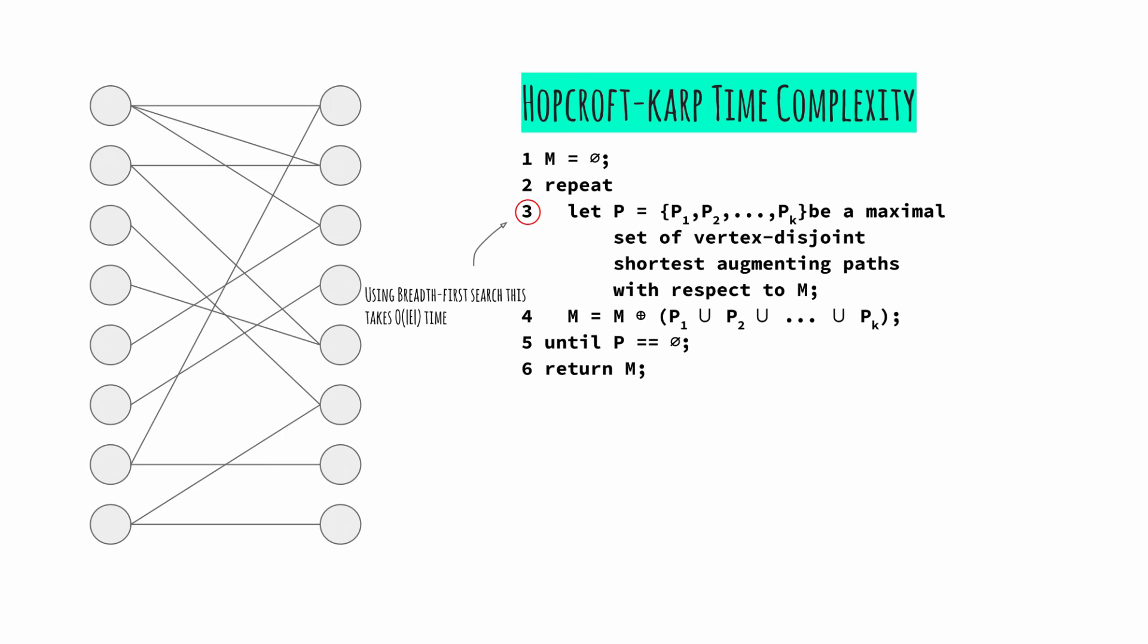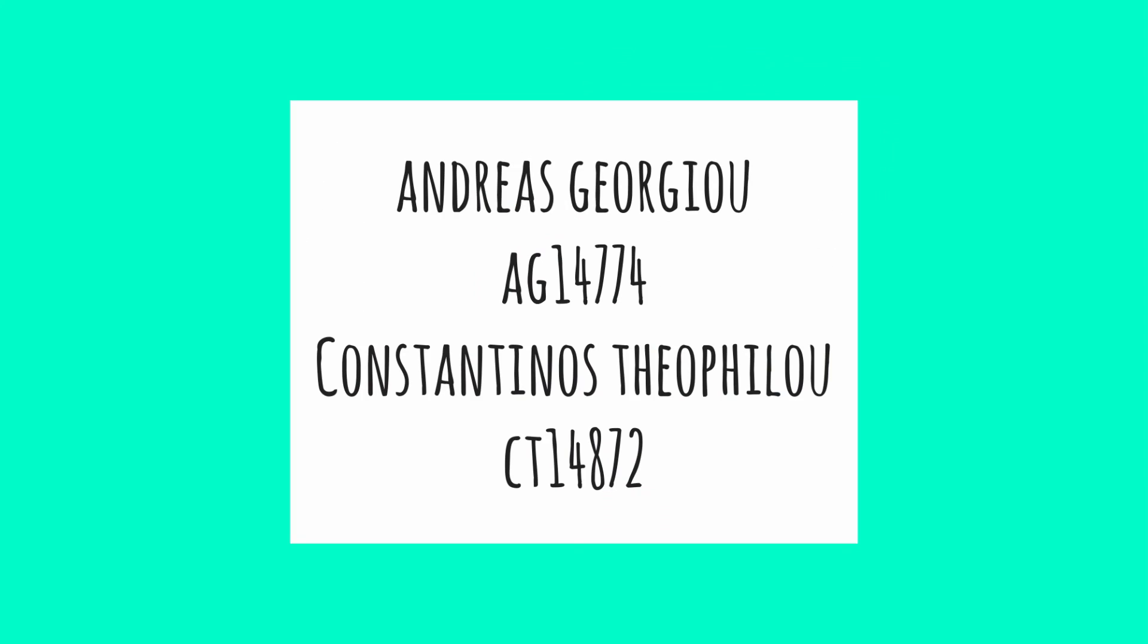The operation of finding the maximal set of vertex disjoint shortest augmenting paths can be implemented using breadth-first search which takes big O v time. Therefore, with each iteration taking big O v time and the maximum of big O square root of v iterations, we end up with a total time complexity of big O v times square root of v. Thanks for watching guys and we hope this helped. Thank you!